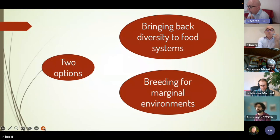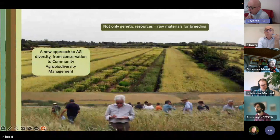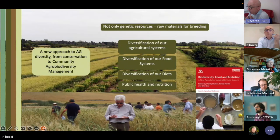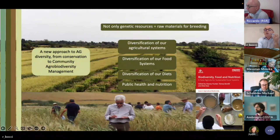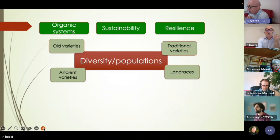According to our experience in Italy, we see two options to bring back diversity to the food system: breeding for marginal environments, and moving from conservation to community agro-diversity management. This means diversifying agricultural and food systems in order to diversify our diets for public health and nutrition — making a link between diversity in the field, diversity in the diet, and public health. This idea is reflected in the newly published book by Bioversity International on biodiversity, food, and nutrition.